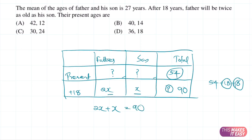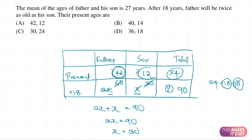So 2x plus x equals 90, meaning 3x equals 90, so x equals 30. The father's age after 18 years will be 60 and the son's age will be 30. Since this is after 18 years, at present we deduct 18 from each: the father's present age is 42 and the son's is 12. Checking the options, option A matches exactly.